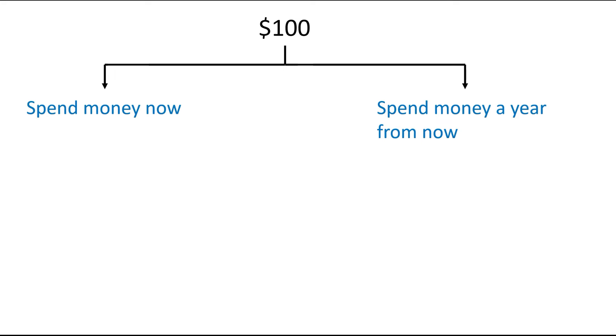Suppose you choose option number one, which is spend money now. Then the final amount that you will spend is $100. However, if you choose option number two, that means you will save that money in a bank account.